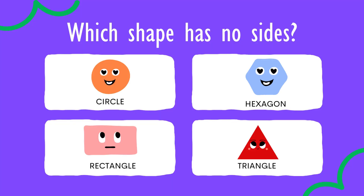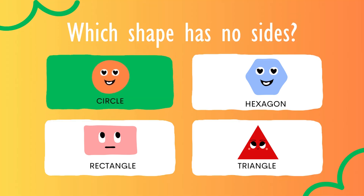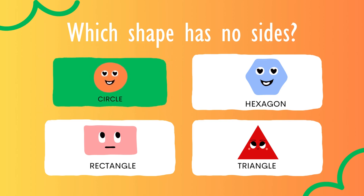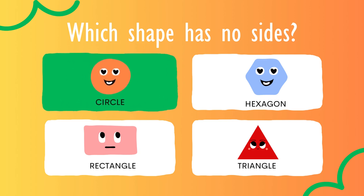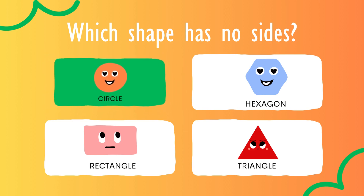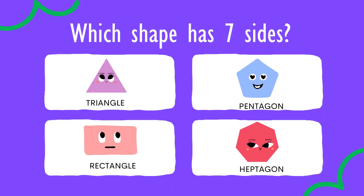Which shape has no sides? Circle. Circle has no sides. Which shape has seven sides?